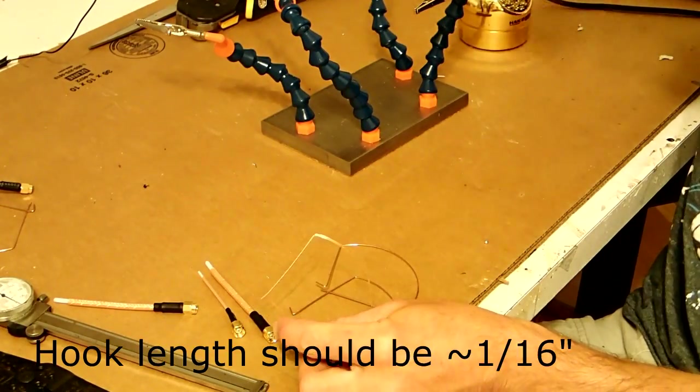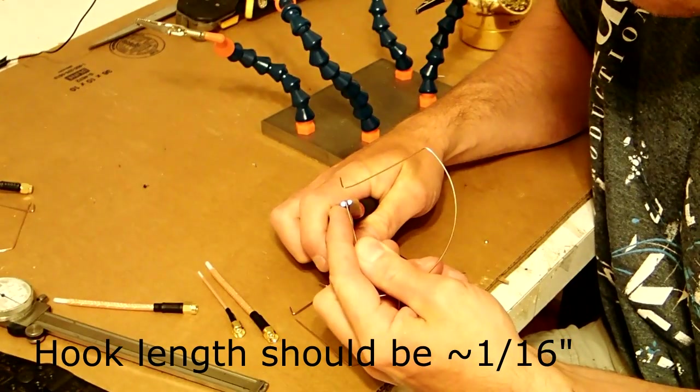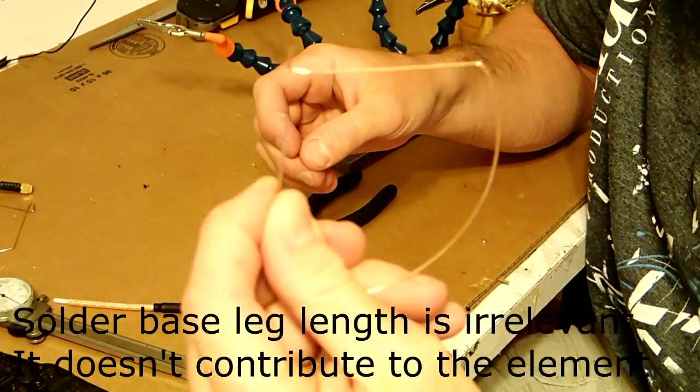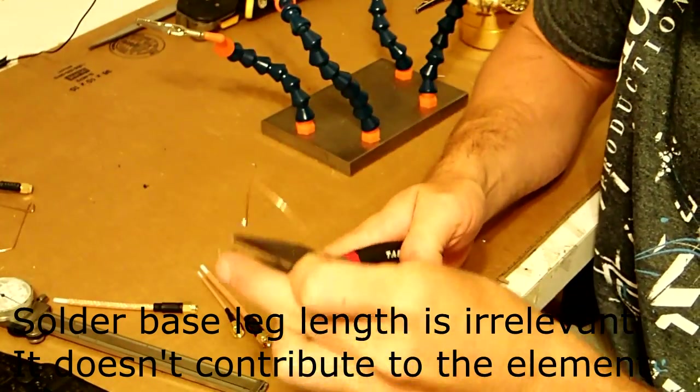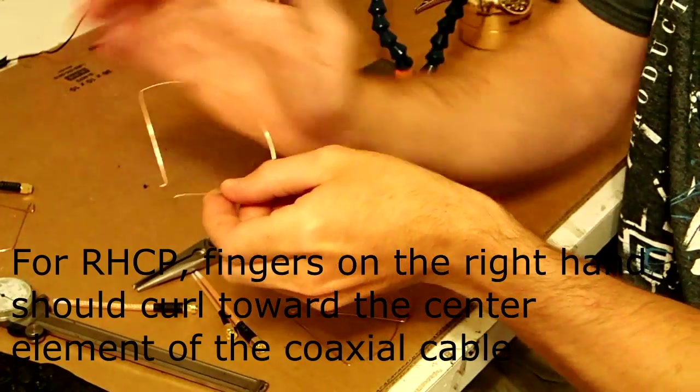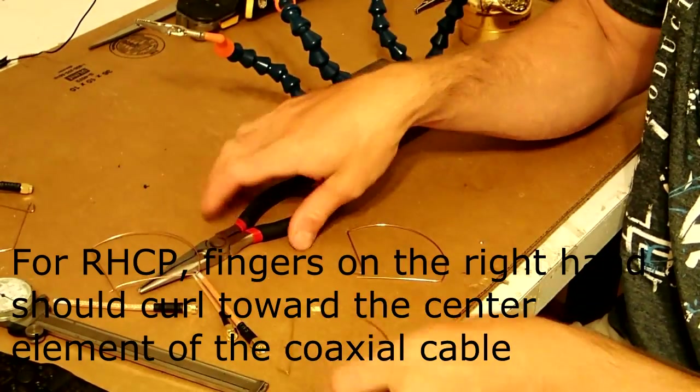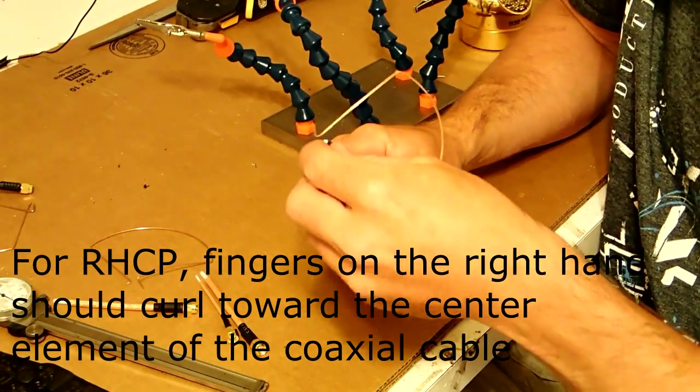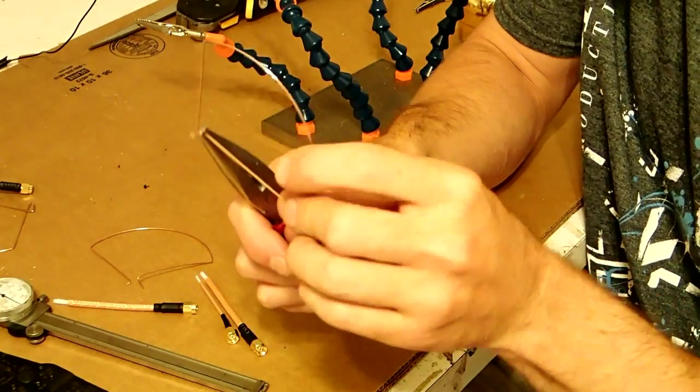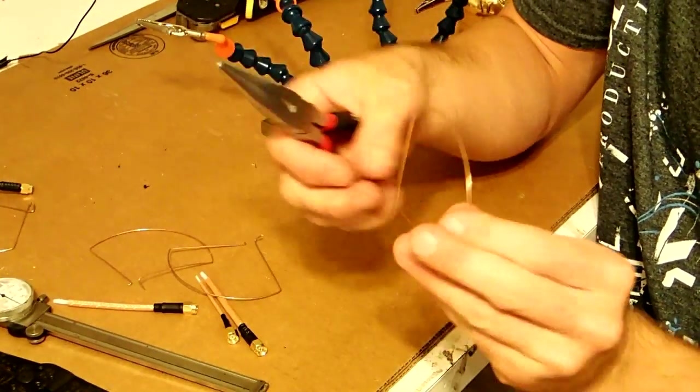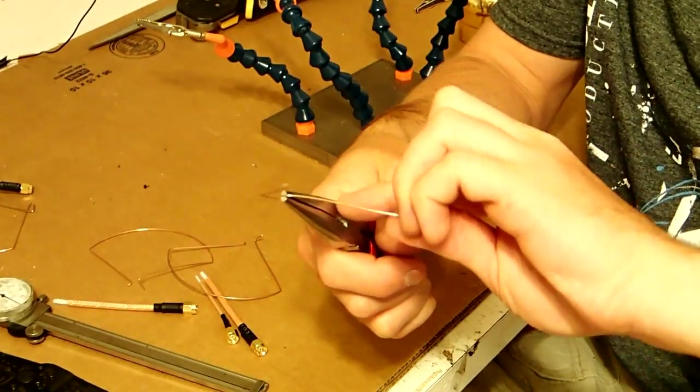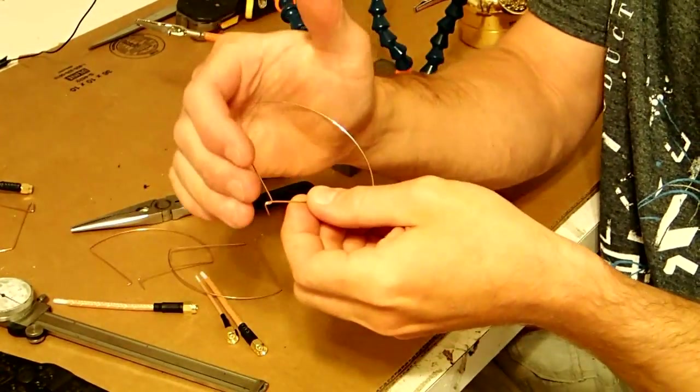Next, if you're using my method, I take a pair of pliers, grab the end and bend a very small hook on the end of the wire. Then I grab this down here and bend over for right hand circularly polarized. Do this to all three lobes. Now you want to keep that hook very short because it takes away from the effective length of the antenna.